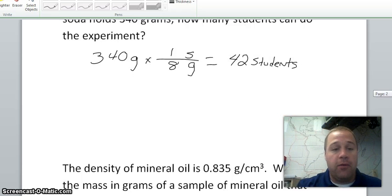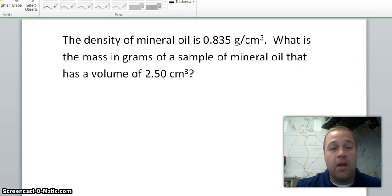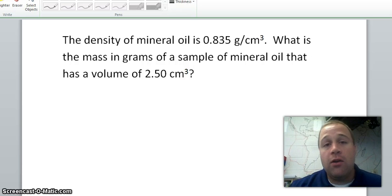The final example for dimensional analysis uses density. There's two different ways you can do this. You could use density equals mass divided by volume, the way we've done in class, and solve for it that way. I'm going to show you how to do it the dimensional analysis way. The problem says that the density of mineral oil is 0.835 grams per centimeter cubed. That's a conversion factor. What 0.835 grams per centimeter cubed means is there are 0.835 grams in every one centimeter cubed. So that's my conversion factor.